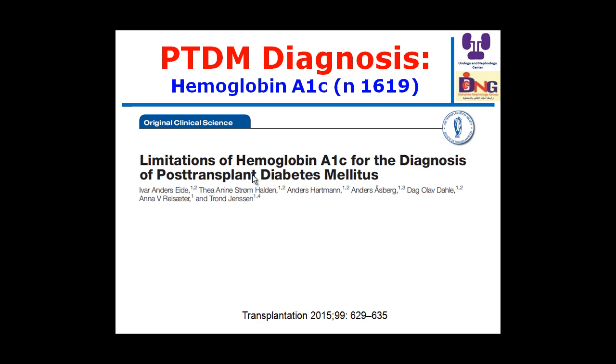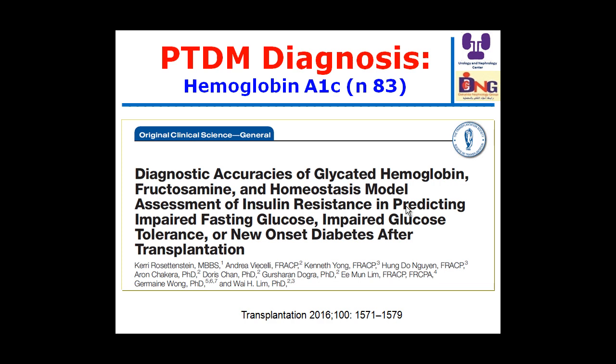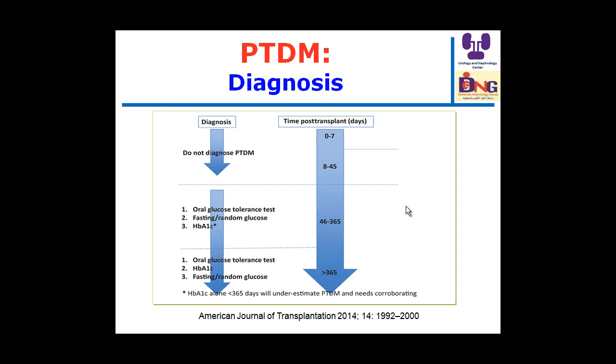Regarding HbA1c for diagnosis of post-transplant diabetes, there are limitations. Reducing the cutoff to 5.5% would increase sensitivity but lower specificity and positive predictive value. One study suggested fructosamine may be superior to HbA1c, but it needs further validation in other studies.